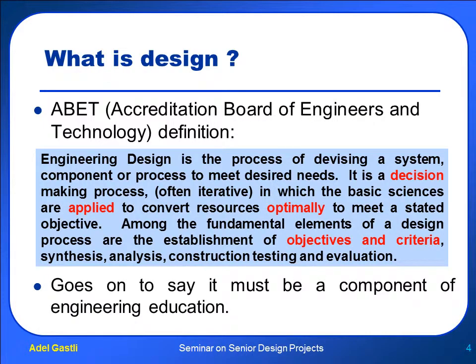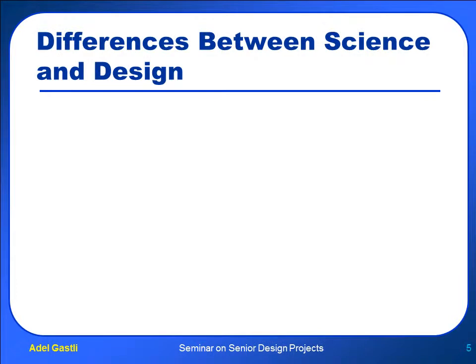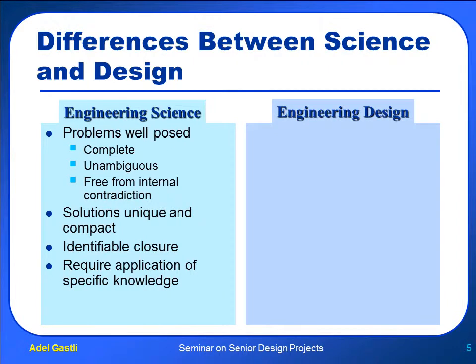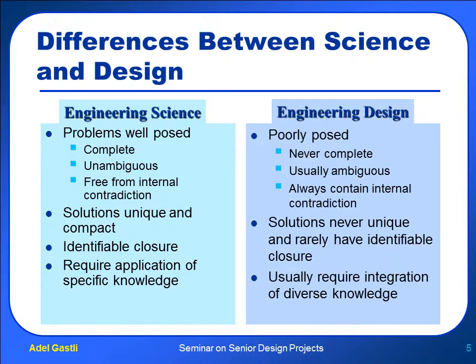This is an essential component of engineering education. Now let's see the differences between engineering science and engineering design. In engineering science, problems are well posed — meaning complete, unambiguous, and free from internal contradiction — and the solutions are unique and compact, with identifiable closures, requiring application of specific knowledge. In contrast, engineering design problems are poorly posed: they are never complete, usually ambiguous, and always contain internal contradictions. The solutions are never unique, rarely have identifiable closures, and usually require integration of diverse knowledge.